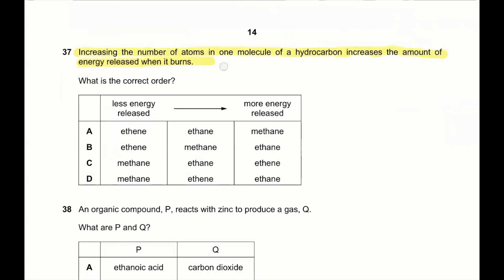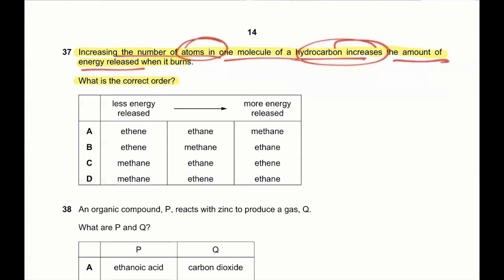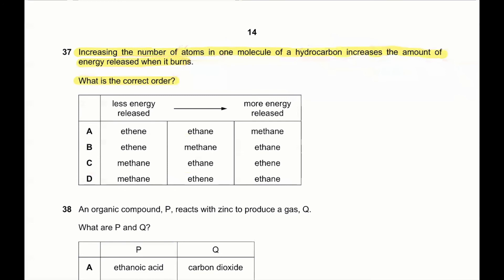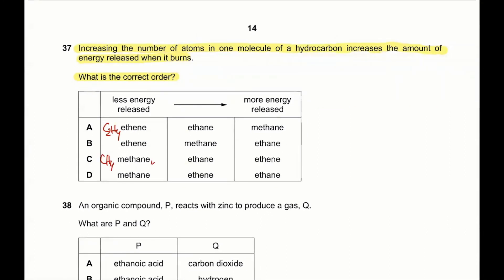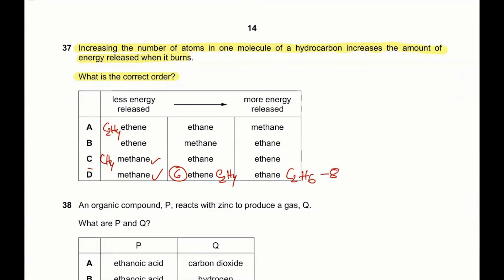Question 37: increasing the number of atoms in one molecule of a hydrocarbon increases the amount of energy released when it burns. What is the correct order? Methane (CH₄) has 5 atoms, ethene (C₂H₄) has 6 atoms, and ethane (C₂H₆) has 8 atoms. So in order of increasing energy released: methane (5 atoms), ethene (6 atoms), ethane (8 atoms). So D is the correct answer.